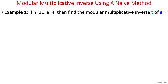Let's look at a simple method to find the modular multiplicative inverse. A naive method is to consider all numbers in the range 1 to n minus 1, and then check for each number whether it is the modular multiplicative inverse or not by calculating its mod.